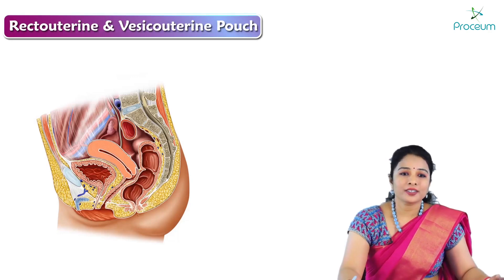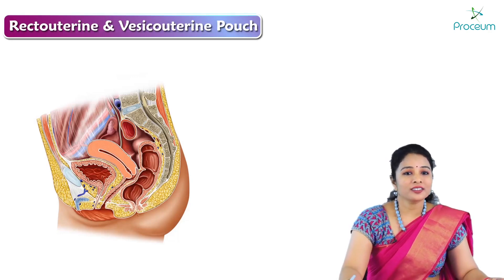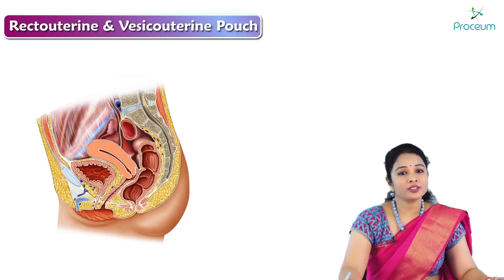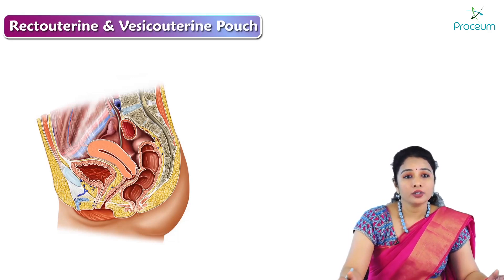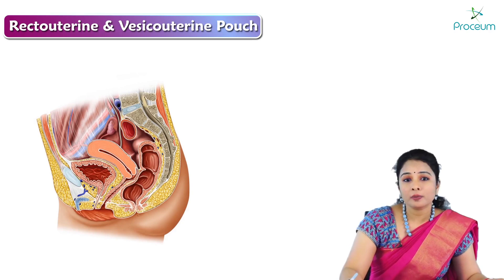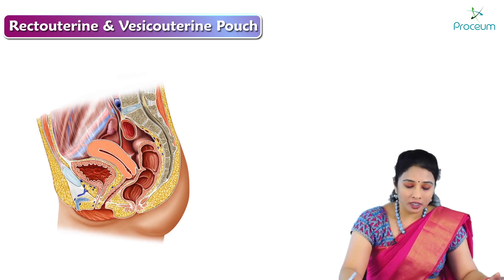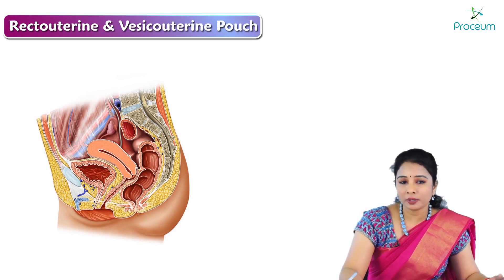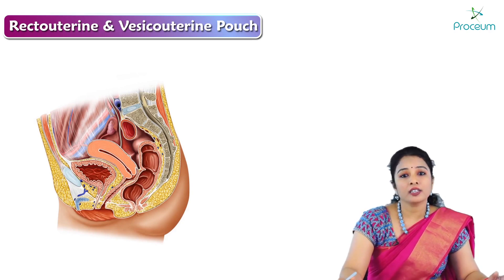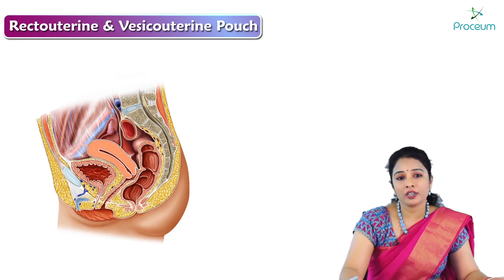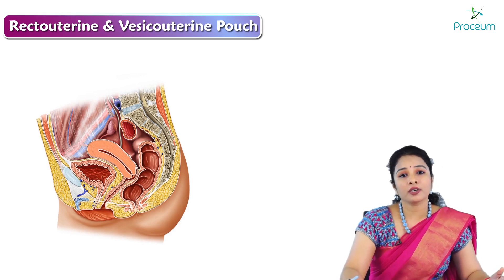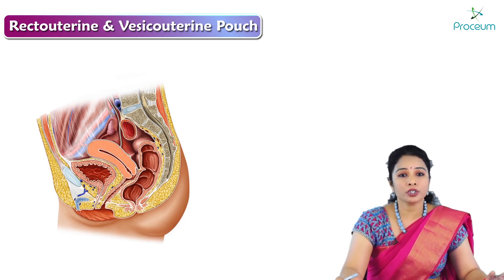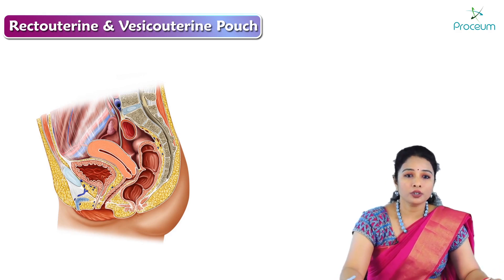Hi there. Today I am going to discuss the recto uterine pouch and utero vesicle pouch which are present in females. These pouches are the peritoneal reflections which are present in front and posterior to the uterus.